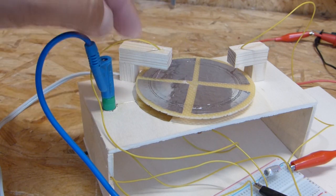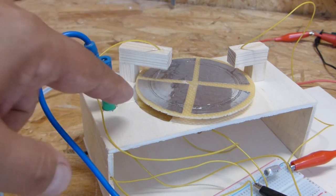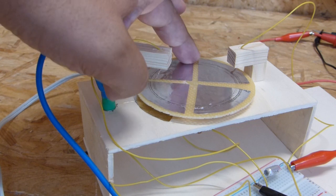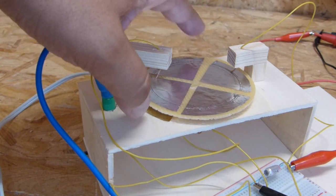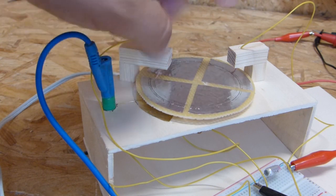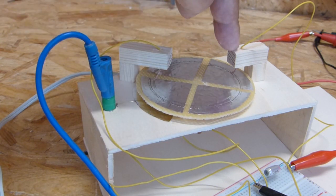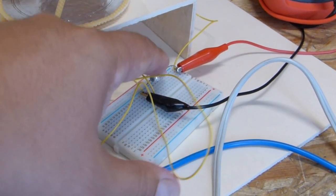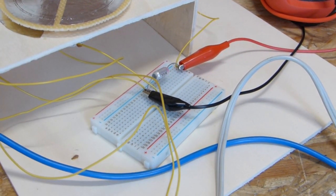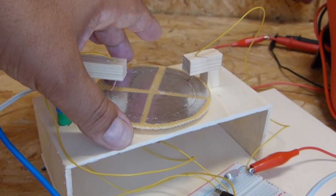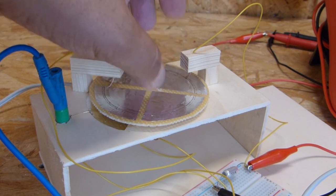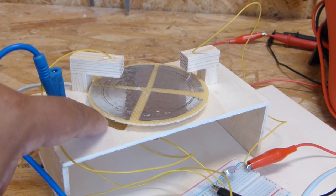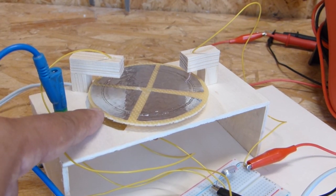So the induced charge here on the segment stays isolated here and is transferred with the moving disc up to this point where the second brush here comes into play and takes away the charge and puts it into a fixed capacitor, which is this one here, you can see.